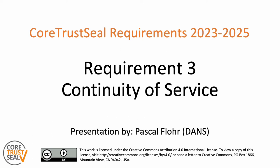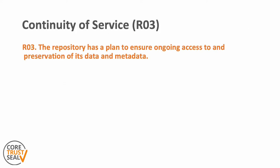It gives a summary and highlights the most important aspects, but please do refer to the full guidelines for the complete requirement text and extended guidelines for more guidance. Also, if you have not already done so, I recommend you watch the general introduction video to this series first. The third requirement of Core Trust Seal is continuity of service, and it reads as follows: the repository has a plan to ensure ongoing access to and preservation of its data and metadata.